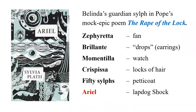In English, 'brilliant' originally means something that shines — so Brillante is associated with earrings, which shine. 'Moment' refers to time, so Momentilla is associated with the watch. Belinda's hair or locks are crispy, so Crispissa guards them. The petticoat is a symbol of virginity, so fifty sylphs guard the petticoat to protect Belinda's virginity.